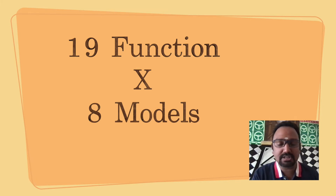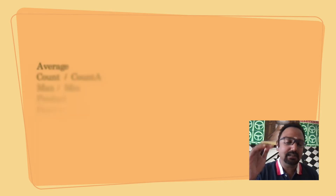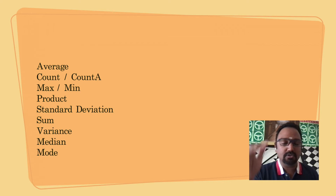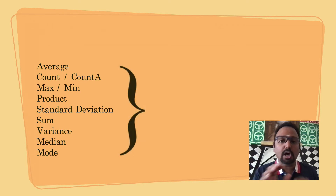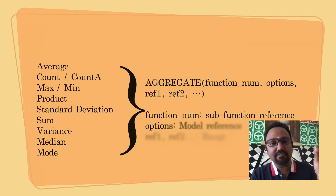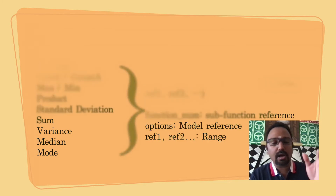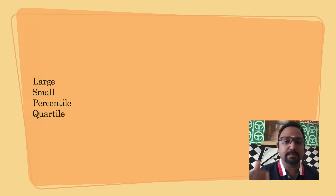This is the speciality. As usual, syntax is very important, but in the formula there is a specific model of syntax. In the average — the 13th function — there is a normal regular formula: function number, model number, and the range. That is how it works. But in the 14th, for large, percentile, and quartile, the range works differently.